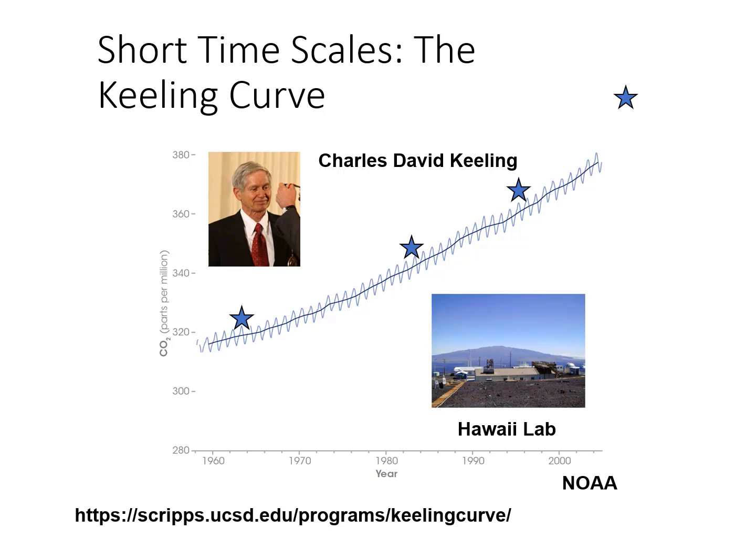Keeling began measuring CO2 because he was curious about variations in CO2. Today, this is one of the most important pieces of evidence we have to show that humans have caused CO2 to rise.